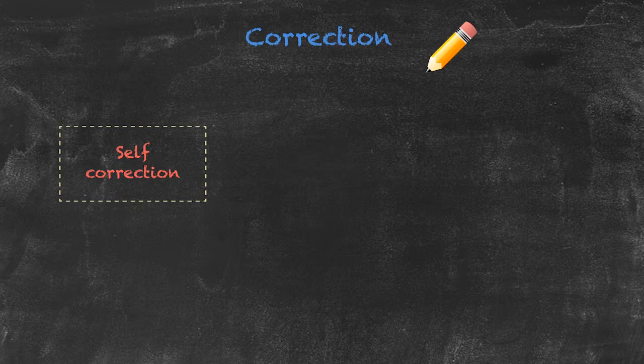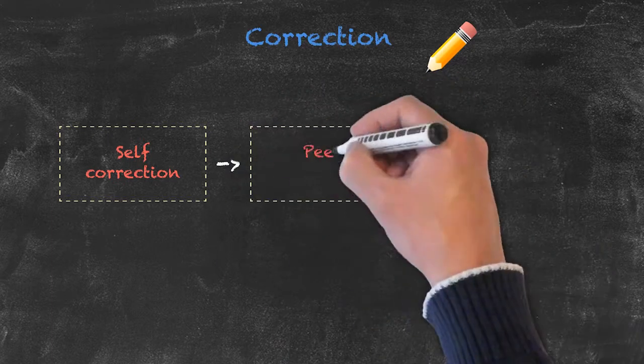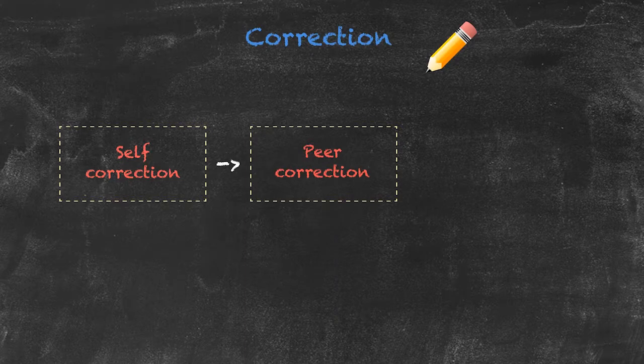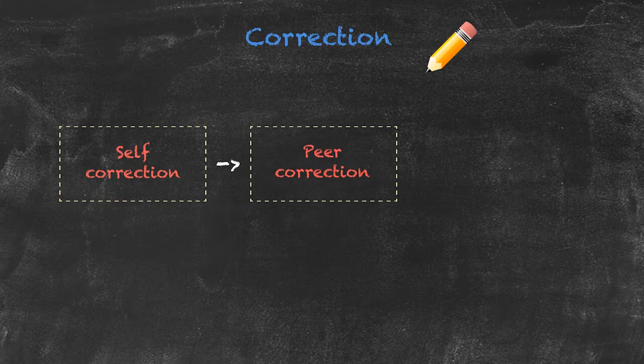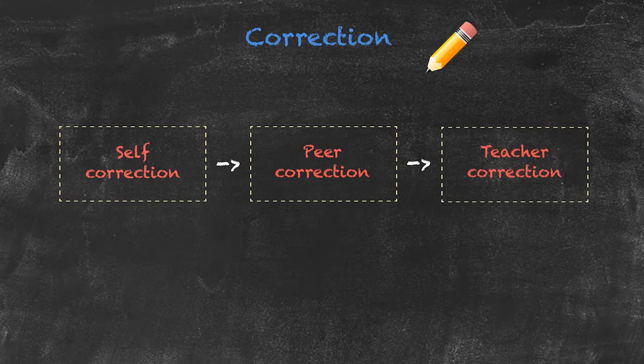It may be that the student has actually got the answer wrong, and so we move on from there. Is there somebody in the class who can give us the correct answer? So moving on to peer correction. Again, it may be possible that we're not able to get the correct answer from anybody in the class, and then we can step in as the teacher, so the teacher will correct.